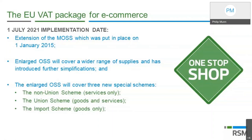Third, and arguably the most complex, is the Import Scheme. As the name suggests, it only affects goods coming from outside the EU to an EU consumer. Even if it is an EU business, if those goods are entering the EU for delivery to a consumer and the value of the consignment is less than €150, you might choose to register under the Import One-Stop Shop scheme. For non-EU businesses that opt to use the import scheme, they must in most member states appoint an intermediary — a local representative responsible for submitting and paying VAT under the Import One-Stop Shop.